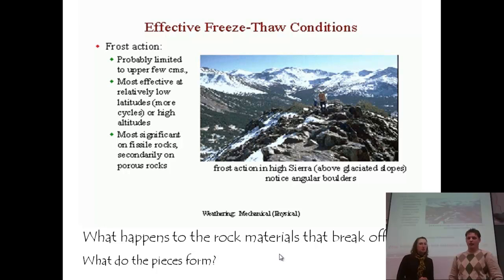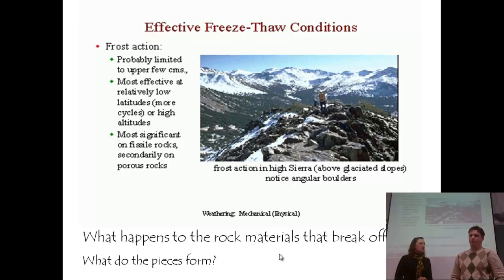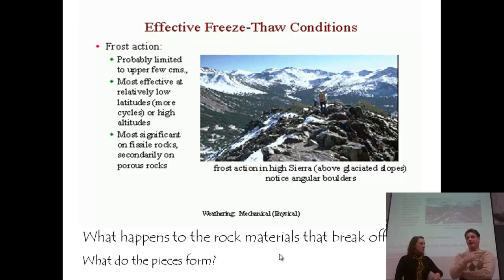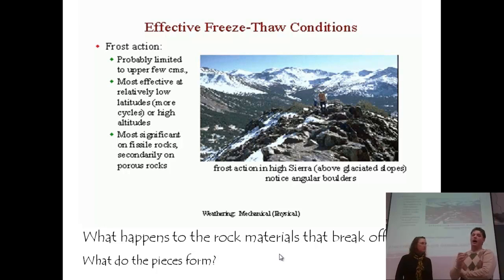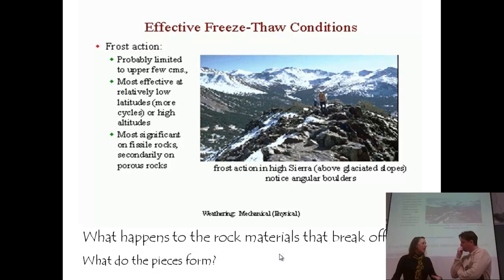What happens to the rock materials that break off, and what do those pieces form? The rock materials that break off are going to undergo mass wasting — they're going to fall down slope by gravity. So we're bringing back that term from the first slide: mass wasting. And that slope that forms where all those chunks are piled up at the base of that mountain or cliff is called a talus slope.